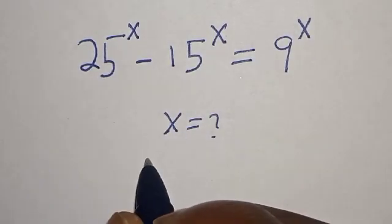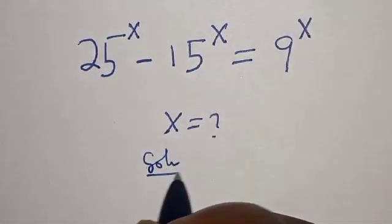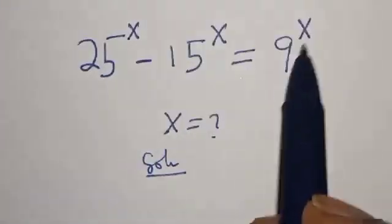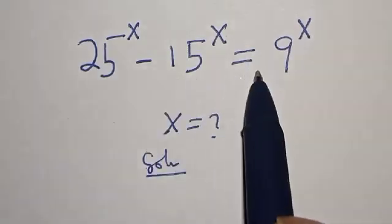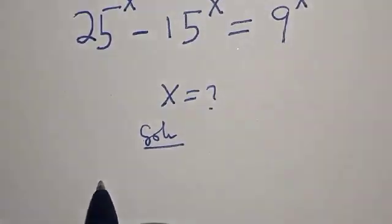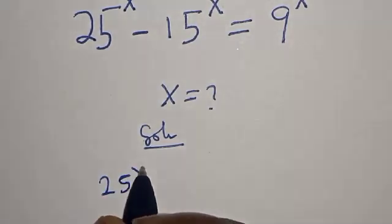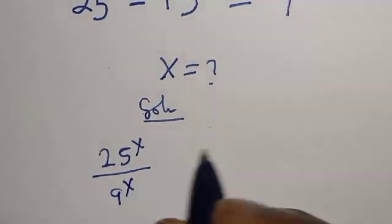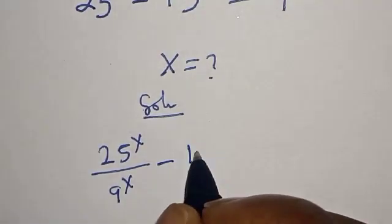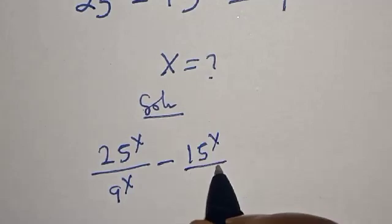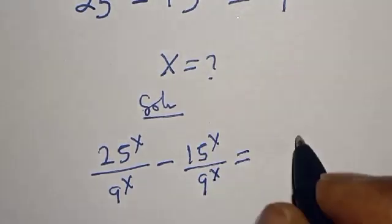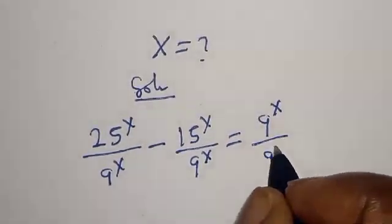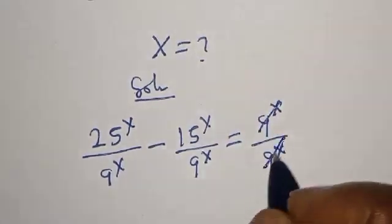Like, share, comment, and subscribe. For the solution: 25 to the power of s minus 15 to the power of s is equal to 9 to the power of s. Let's divide both sides by 9 to the power of s. That gives us 25 to the power of s divided by 9 to the power of s, minus 15 to the power of s divided by 9 to the power of s, is equal to 9 to the power of s divided by 9 to the power of s. This one will cancel this one.